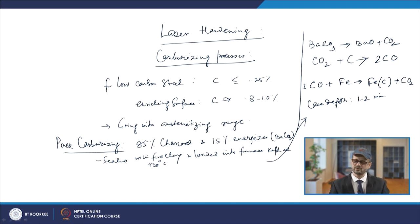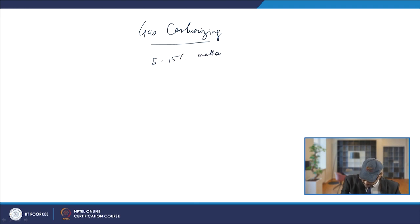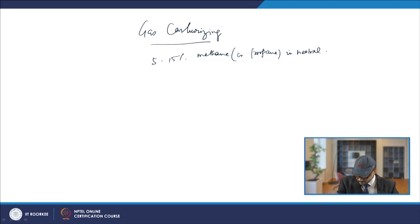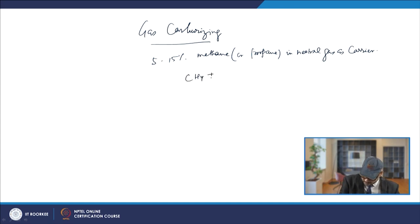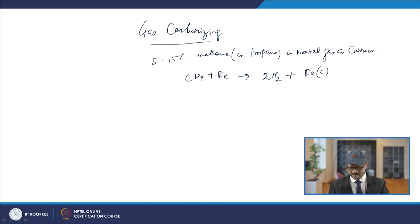The next type is gas carburizing, where gases like methane or propane are used — typically 5 to 15% methane or propane in a neutral carrier gas. The methane decomposes and reacts with iron, causing carbon pickup in the steel, which gives better surface hardness.